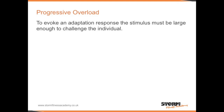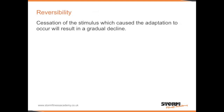Progressive overload: to evoke an adaptation response, the stimulus must be large enough to challenge the individual. Reversibility: cessation of the stimulus which caused the adaptation to occur will result in a gradual decline — known as 'use it or lose it'.